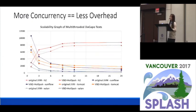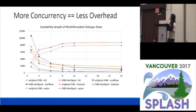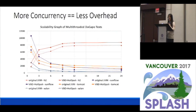Another common question about memory models and sequential consistency is: how does the overhead change if you have more concurrency? We tested this and found that if you have more concurrency, the relative overhead of VBD HotSpot is actually lower.